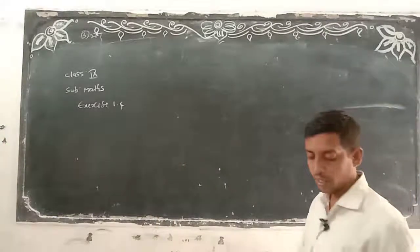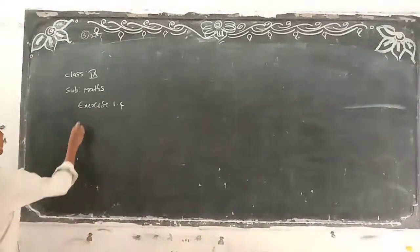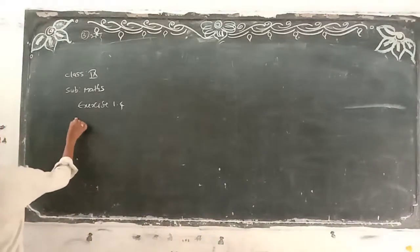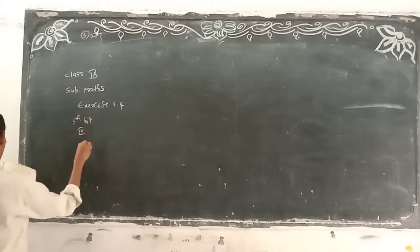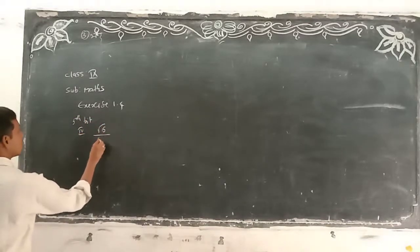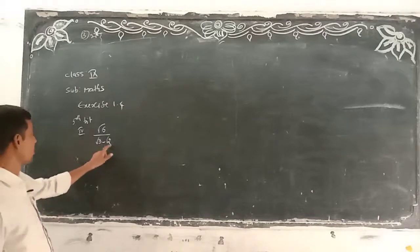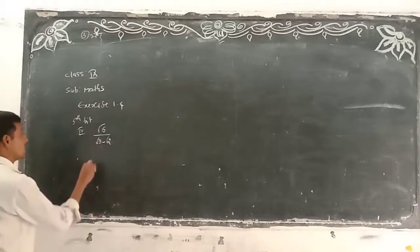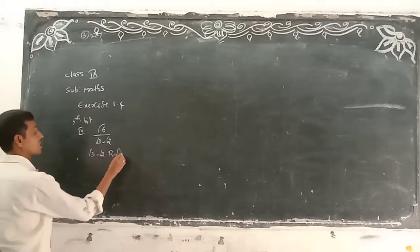The 5th bit, 4th problem: root 6 divided by (root 3 minus root 2). Rationalize the denominator only. What is the denominator? Root 3 minus root 2.